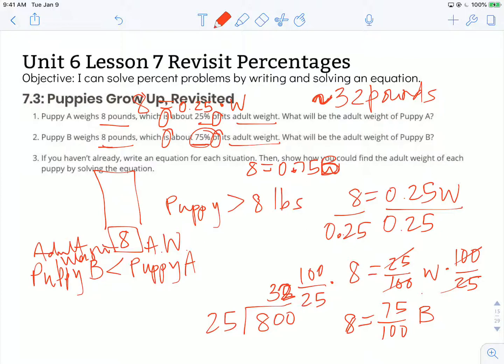And then I would use that same process to solve. One thing that I do know about 75 hundredths is that's the same thing as 3 fourths. So 8 is the same thing as 3 fourths of B. So I could solve this equation by dividing by 3 fourths, which is the same thing as multiplying by 4 thirds, because 4 divided by 4 is 1, and 3 divided by 3 is 1. So I'm left with 1B.